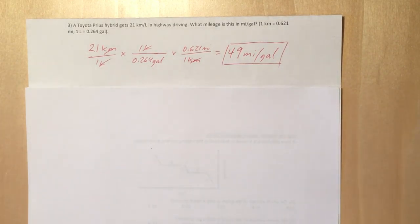You have to go back to the given numbers to see what significant figures you want. Since there's two sig figs in the given number, 21 kilometers per liter, you're going to put two sig figs in your answer. So your answer is 49 miles per gallon.